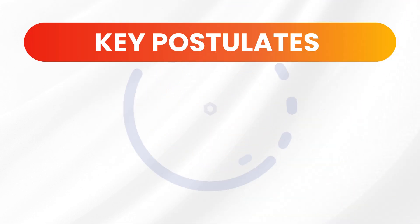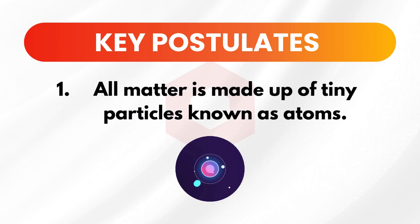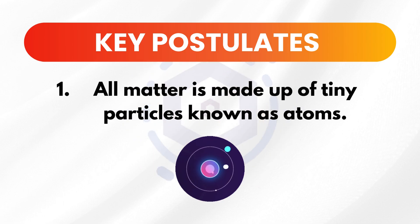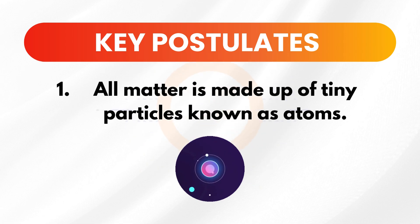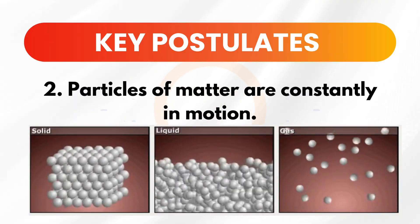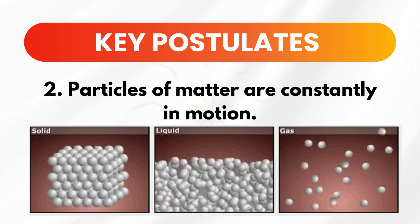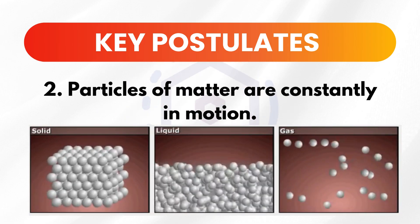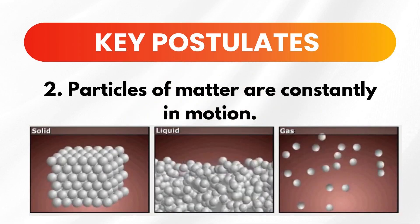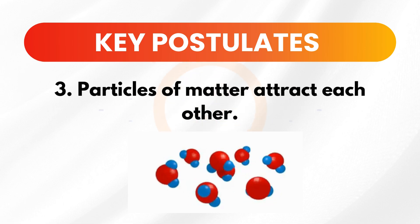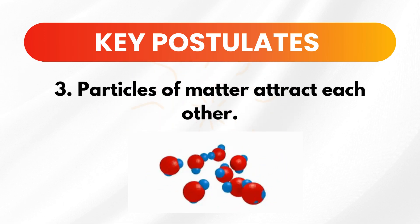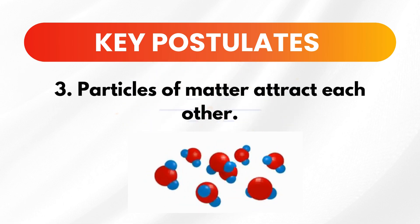Here are the key postulates of the particle theory of matter. Number 1: All matter is made up of tiny particles known as atoms. Everything you see, touch, and even things you can't see, like the air, are made of tiny particles called atoms. Number 2: Particles of matter are constantly in motion. Even in a solid object that seems perfectly still, the particles are vibrating in place. Number 3: Particles of matter attract each other. This attraction is what holds substances together and gives them structure.